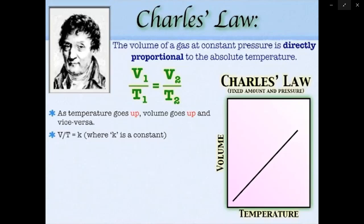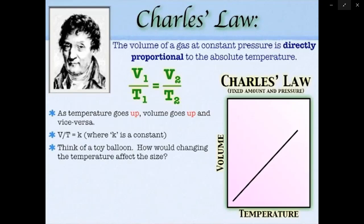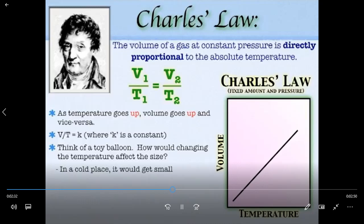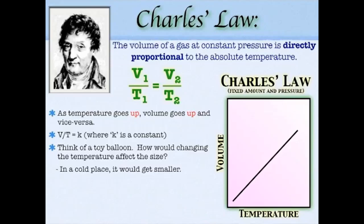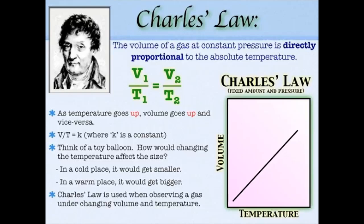If Charlie Brown's balloon ended up inside an oven, it would expand until it eventually popped. Keep that toy balloon idea in mind. Charles' Law is really all about changing temperature to observe volume changes. I can't think of a situation where you'd change volume without changing pressure or amount, so Charles' Law is mainly used with increasing or decreasing temperature. Let's look at two examples of Charles' Law, just as we did for Boyle's Law.